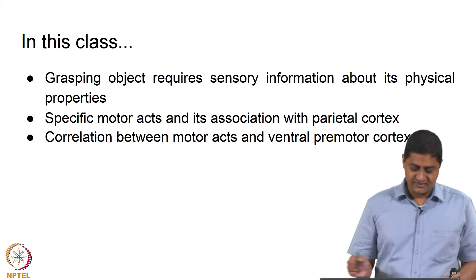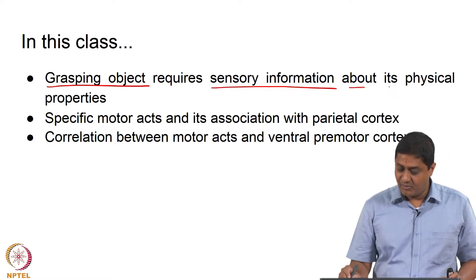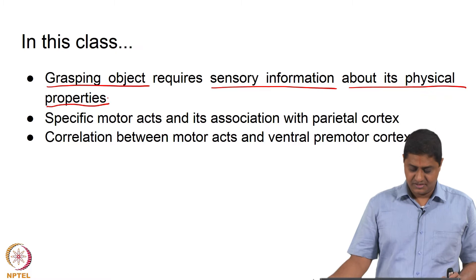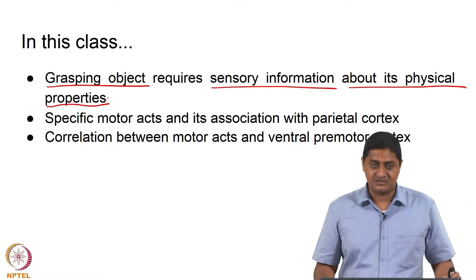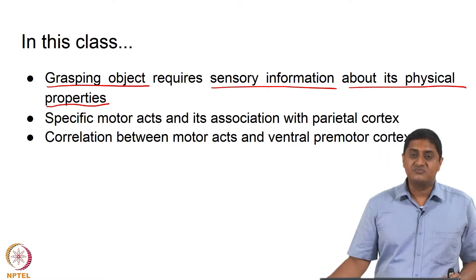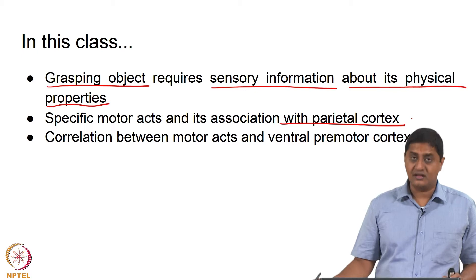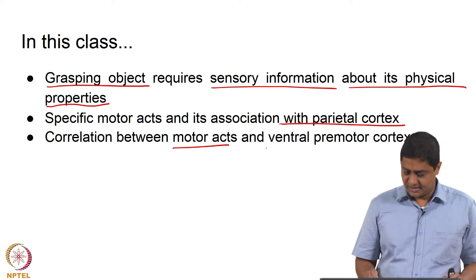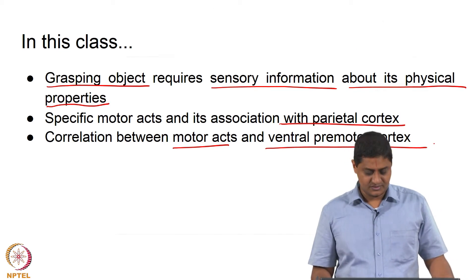In this class we will see how grasping an object requires sensory information about the physical properties of this object — for example, the dimension, the texture — and specific motor acts and their association with the Parietal Cortex, and the correlation between motor acts and the activity in the ventral premotor cortex.